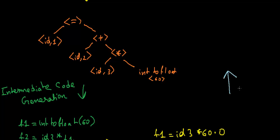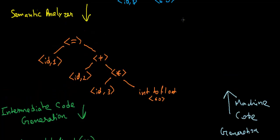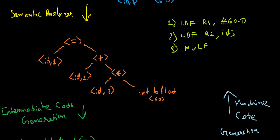Finally it will go to the machine code generation. Machine code generation, here machine dependent language is formed. We will have something like this: load register r1, we will load the value 60, then we will write load in register 2 that id 3 value. Now similarly, now we multiply, MULF r2, r1 and r2 will be multiplied.